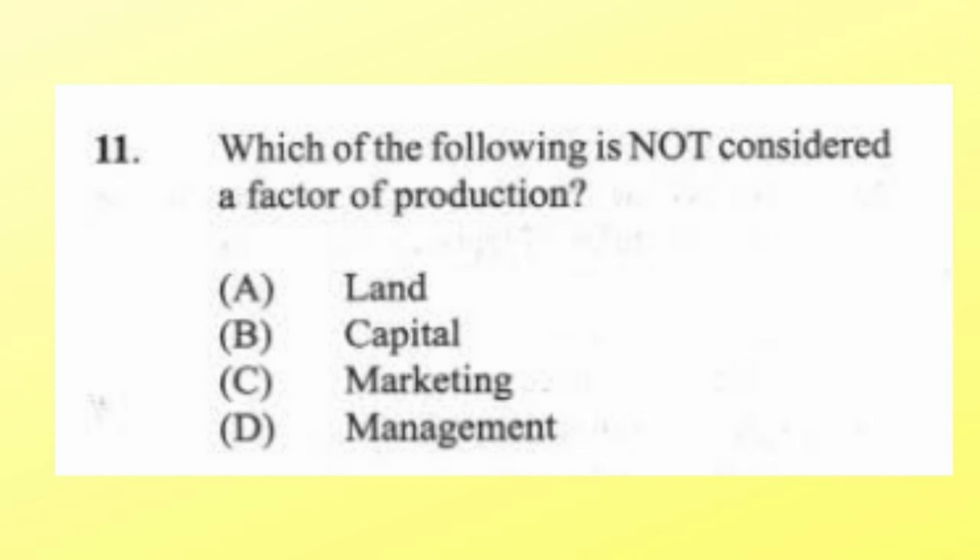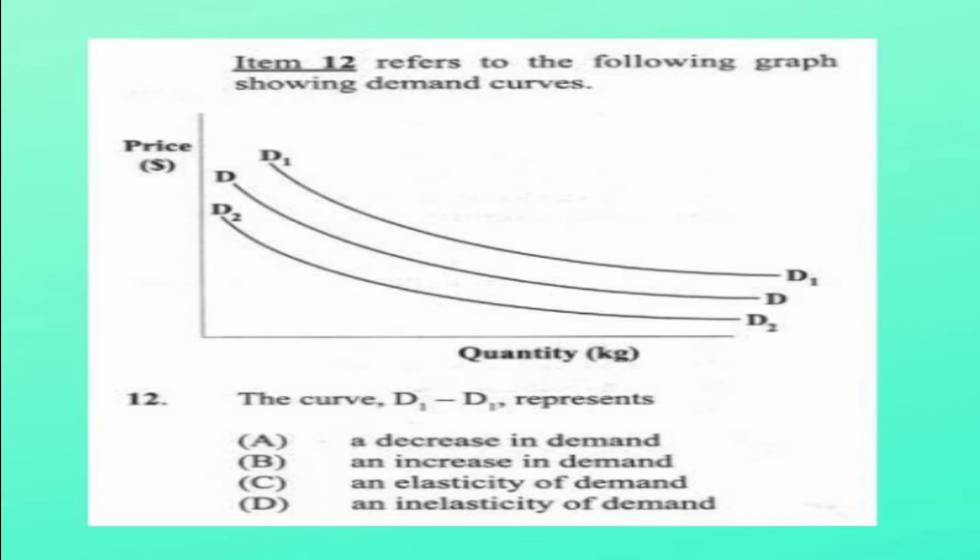Question 11: Which of the following is not considered a factor of production? (a) land, (b) capital, (c) marketing, (d) management. The answer is C, marketing. Marketing basically falls under management.